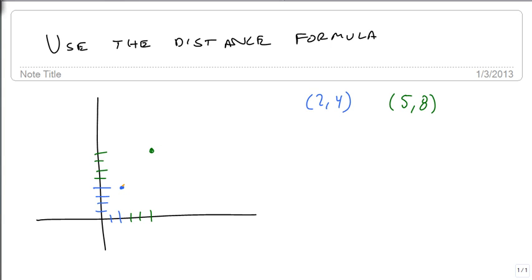And we want to know how long this orange line is. So the way we're going to find the distance here is we're going to create a new point that takes the y value of one and the x value of the other. And it doesn't matter which way you do this, but I'm going to take the y of the first point and the x of the second point and get a point right here at 5, 4.